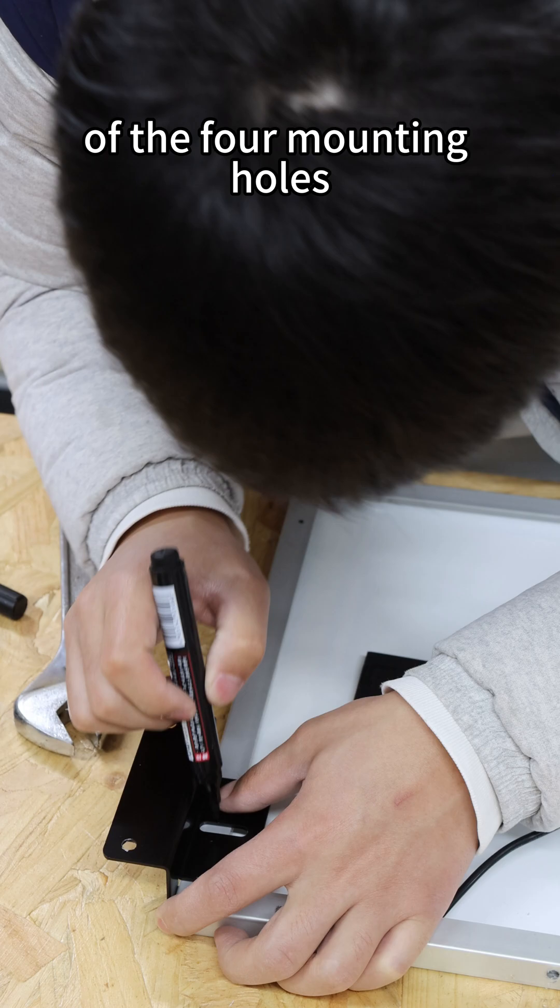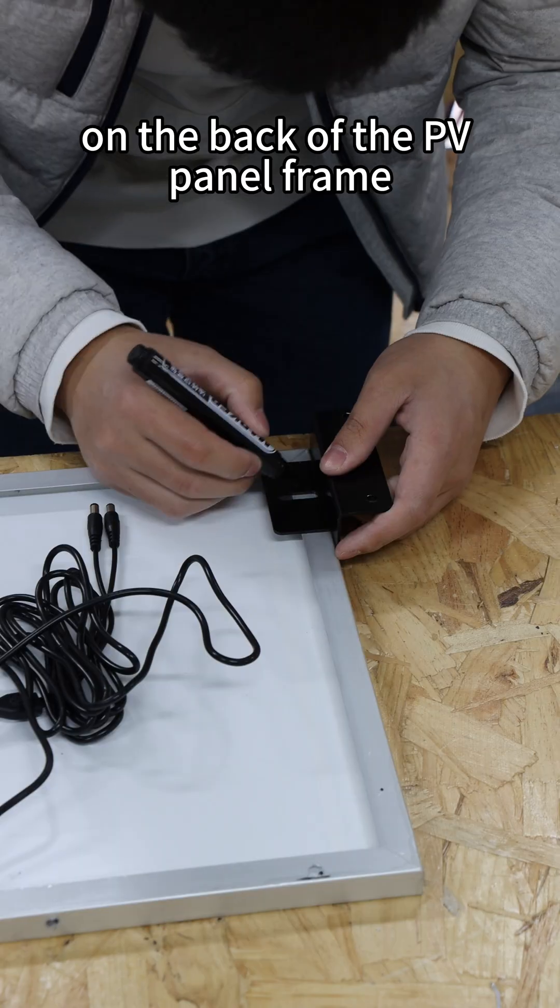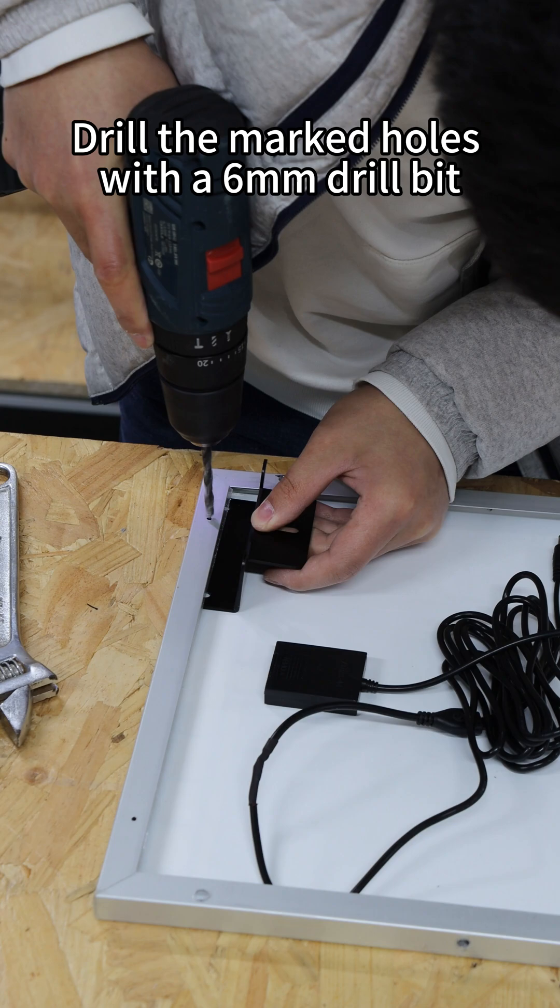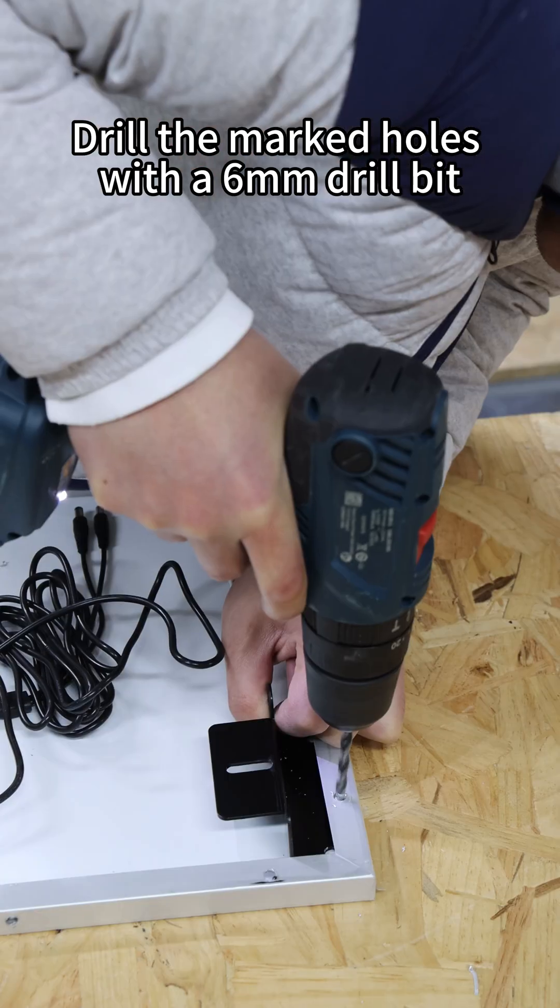Mark the position of the four mounting poles on the back of the PV panel frame. Drill the marked holes with a 6 mm drill bit.